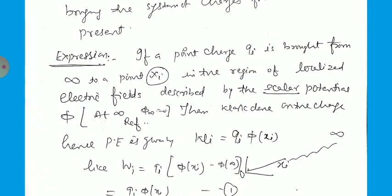How can we obtain the expression for it? If a point charge Q_i is brought from infinity to the point X_i in the region of a localized electrostatic field described by the scalar potential φ, with the reference that φ equals zero at infinity, then the work done on the charge — hence the potential energy given to this charge — is W_i equal to Q_i times φ(X_i). So we can write W_i equal to Q_i times [φ(X_i) minus φ(infinity)], because from one point to another the potential difference is this.